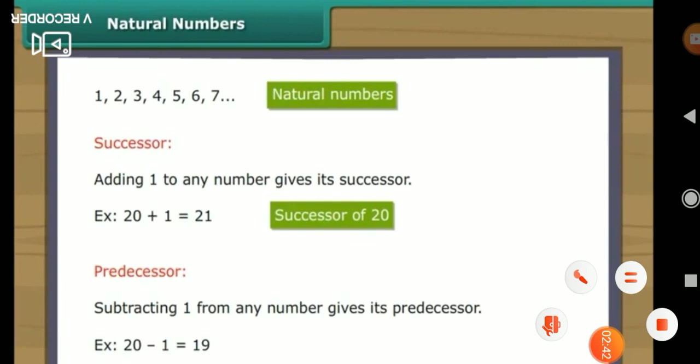Dear students, you will know what natural numbers are. The counting numbers are natural numbers. The examples are 1, 2, 3, 4, 5, 6 and so on. All counting numbers are natural numbers.